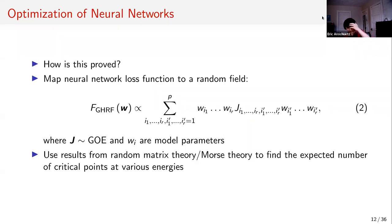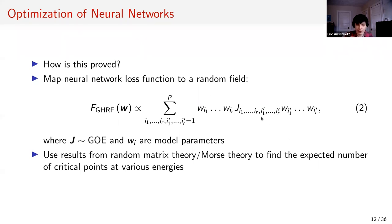How do they show this? It's essentially a two-step process. First, they show that their neural network loss function can be expressed as a random field — a random function on the space of parameters (the weights W), which live on a sphere under L2 normalization. The loss function looks like a function where J is drawn from the Gaussian Orthogonal Ensemble — random Gaussian Hermitian symmetric matrices. Then once you have this mathematical object, you use techniques from random matrix theory and Morse theory to look at what the critical point distribution looks like.